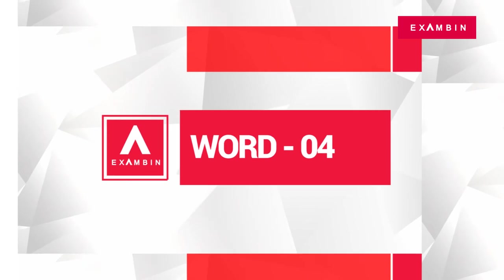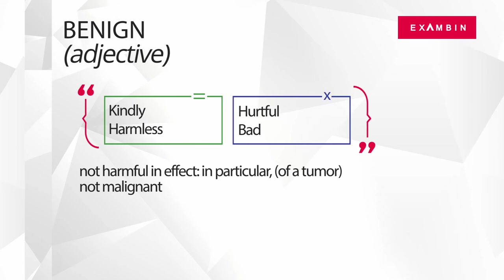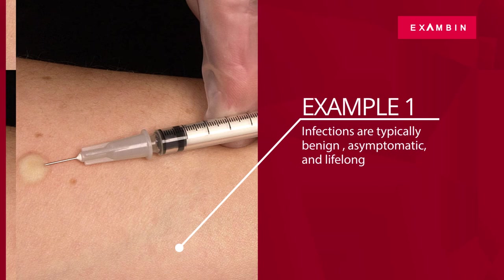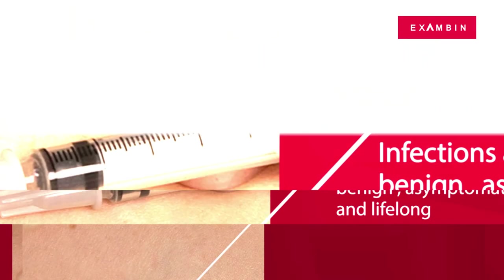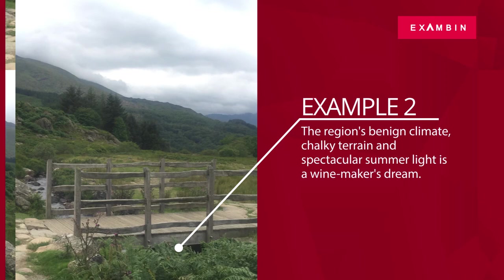The fourth word of the day is 'benign.' Benign is an adjective. The direct synonyms of benign are 'kindly' and 'harmless.' In general context, benign means not harmful in effect — in particular, of a tumor, not malignant. 'Hurtful' and 'bad' are some terms referring to the opposite meaning. Example: 'Infections are typically benign, asymptomatic, and lifelong.' Another example: 'The region's benign climates, chalky terrain, and spectacular summer light is a winemaker's dream.'